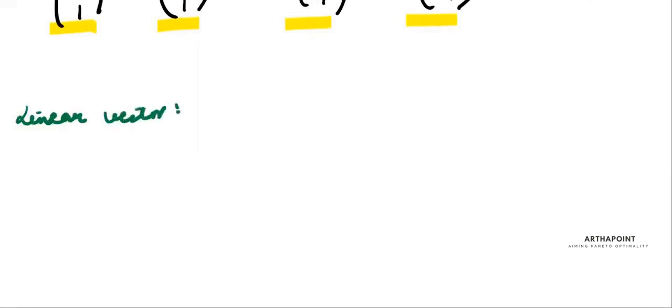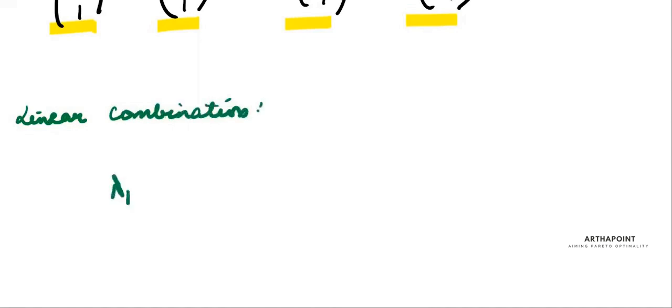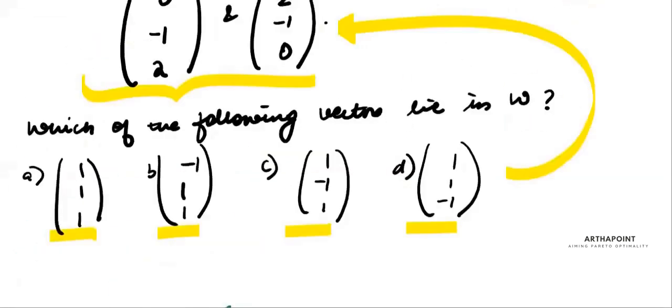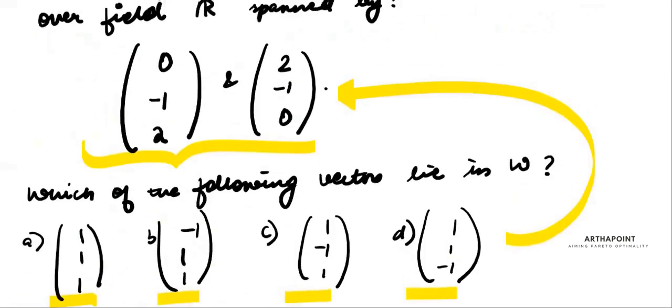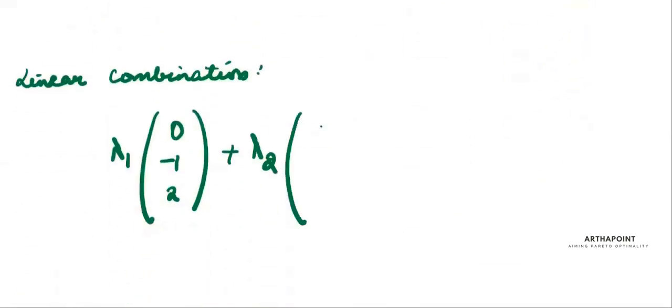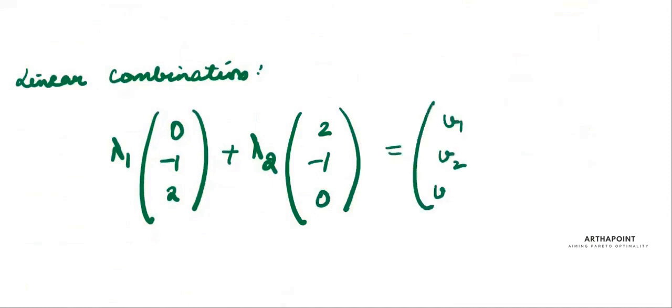So let's find what a linear combination of these vectors looks like. A linear combination would be λ₁ times the first vector (0, -1, 2) plus λ₂ times the second vector (2, -1, 0). This should equal my target vector (v1, v2, v3).